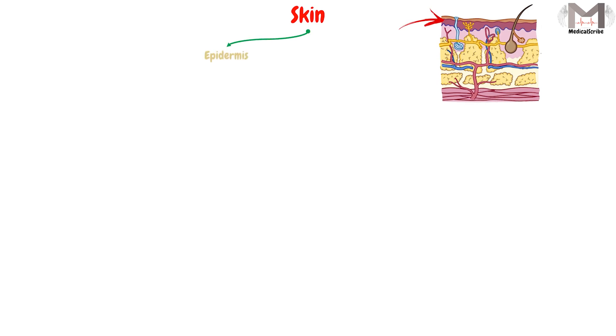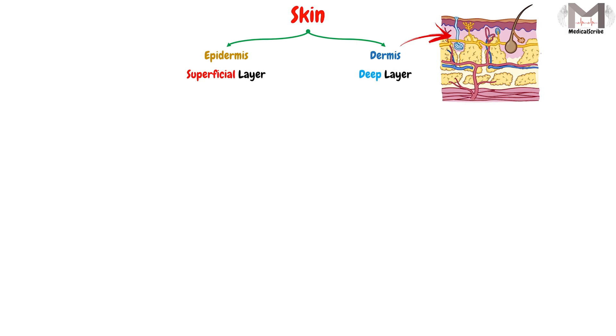In the previous video, we said that the skin is composed of two layers: the epidermis, which is the superficial layer, and the dermis, which is the deep layer found under the epidermis. We will explain the dermis layer today.